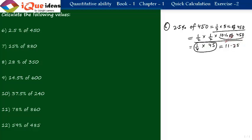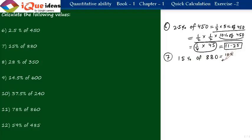Question 7: 15 percent of 880. Split it as 10 percent plus 5 percent of 880. 10 percent of 880 is 88. 5 percent is half of 88, which is 44. Adding them: 88 plus 44 equals 132. So 132 is the final answer. We have broken 15 into 10 percent plus 5 percent.